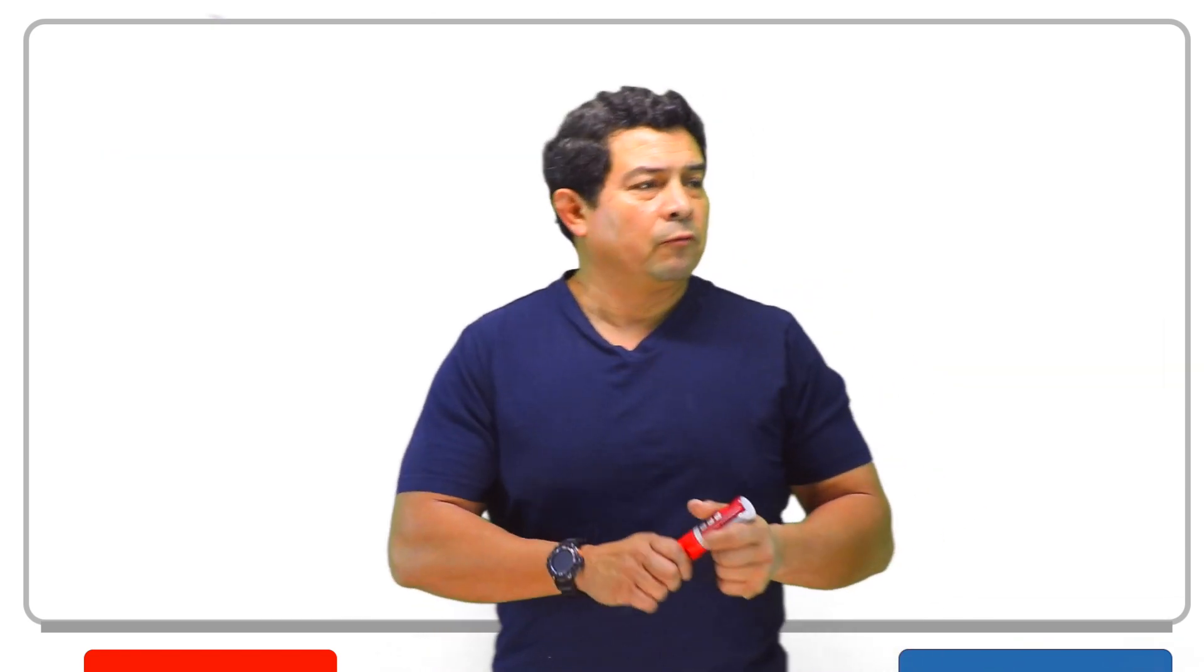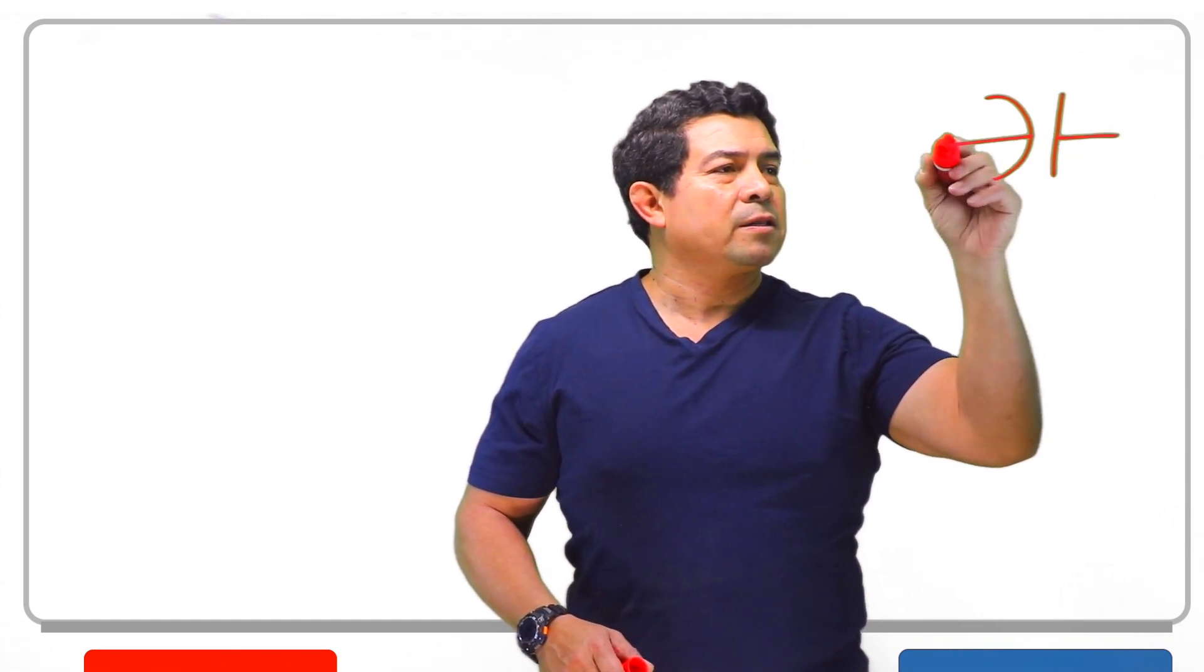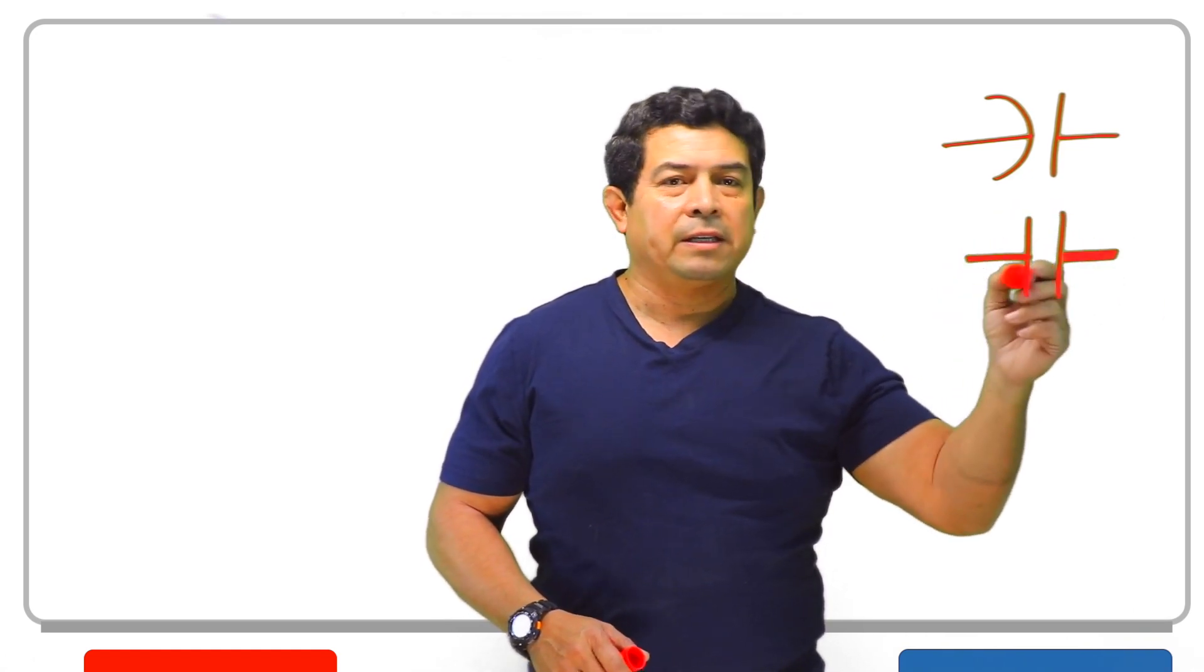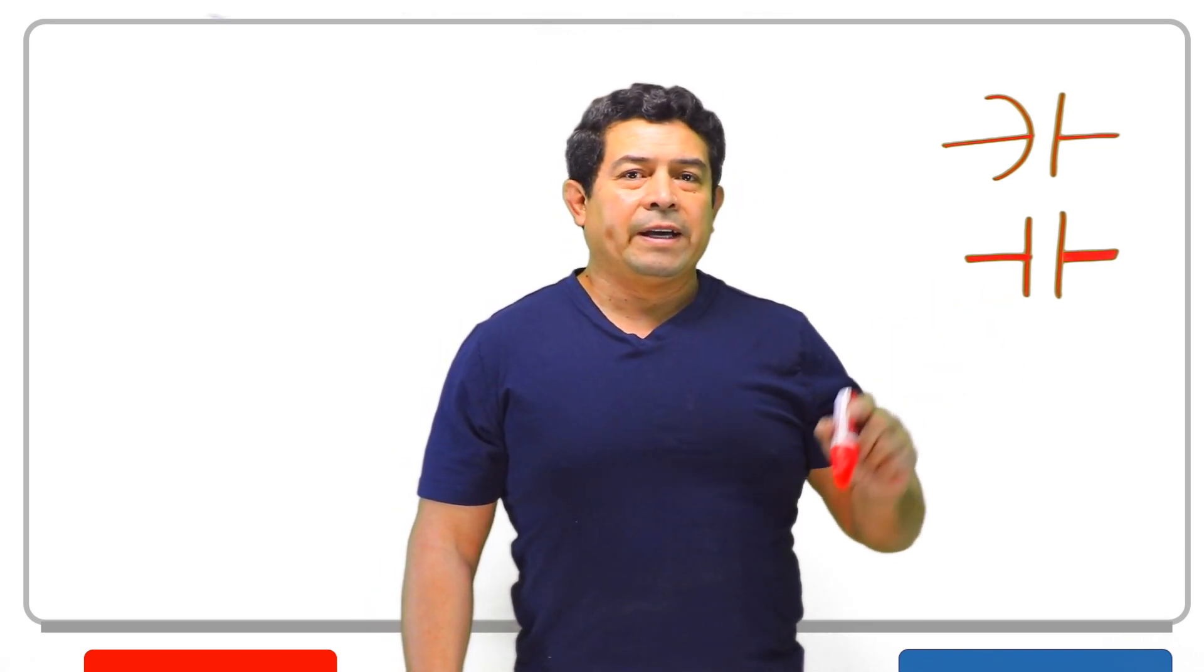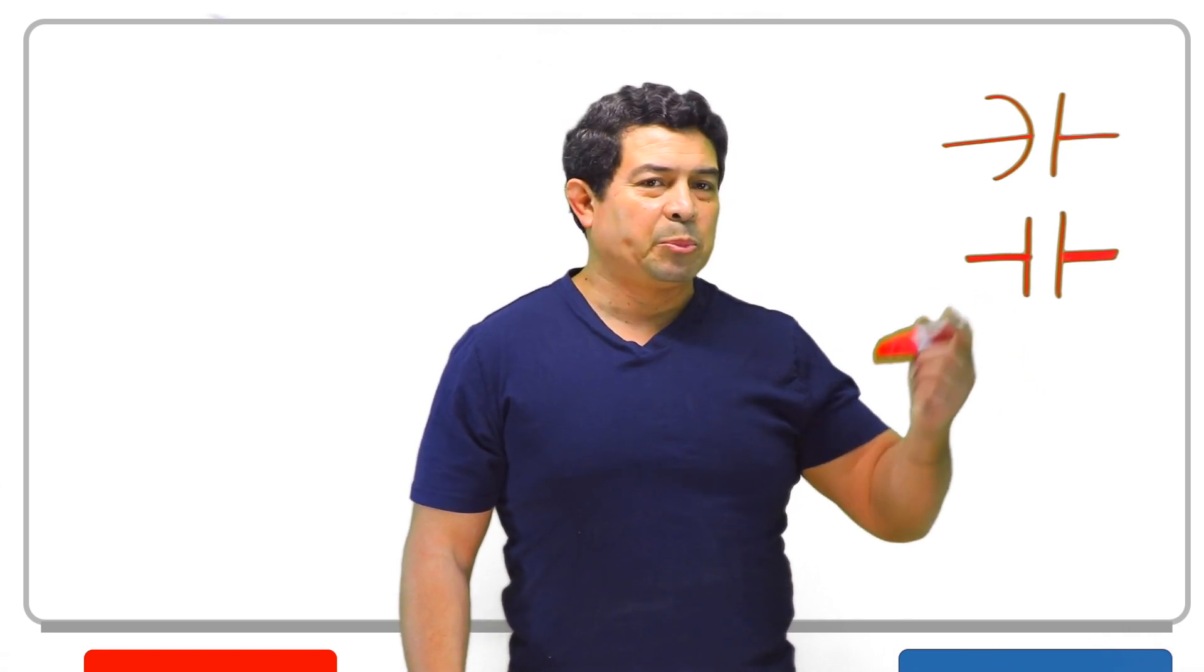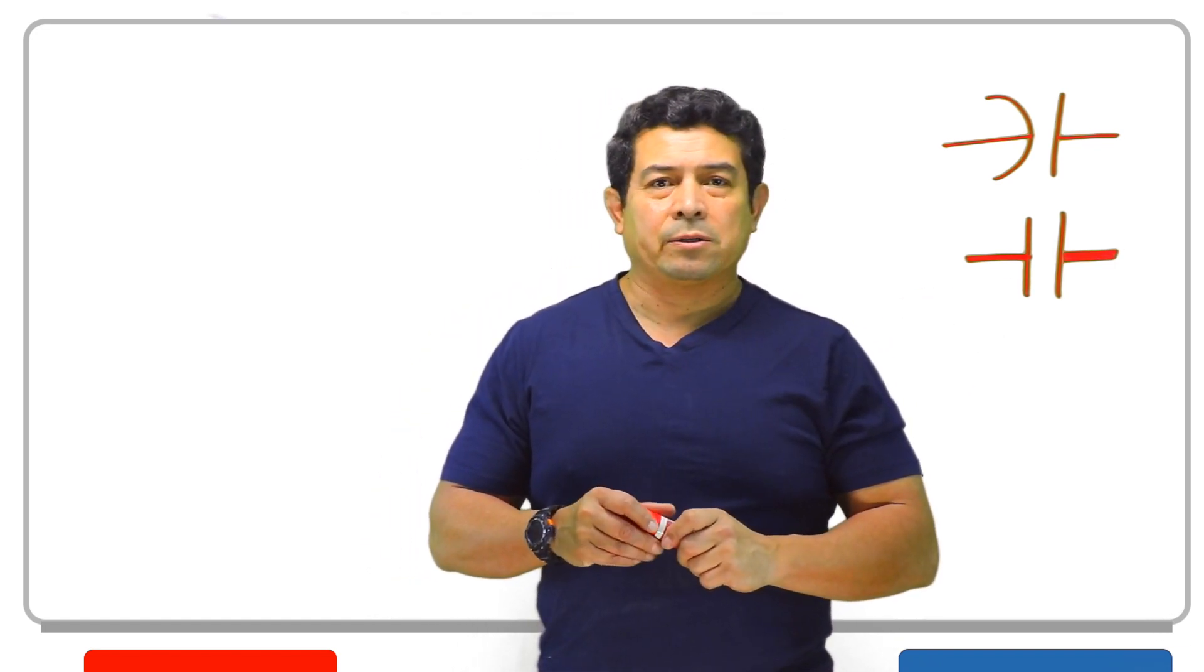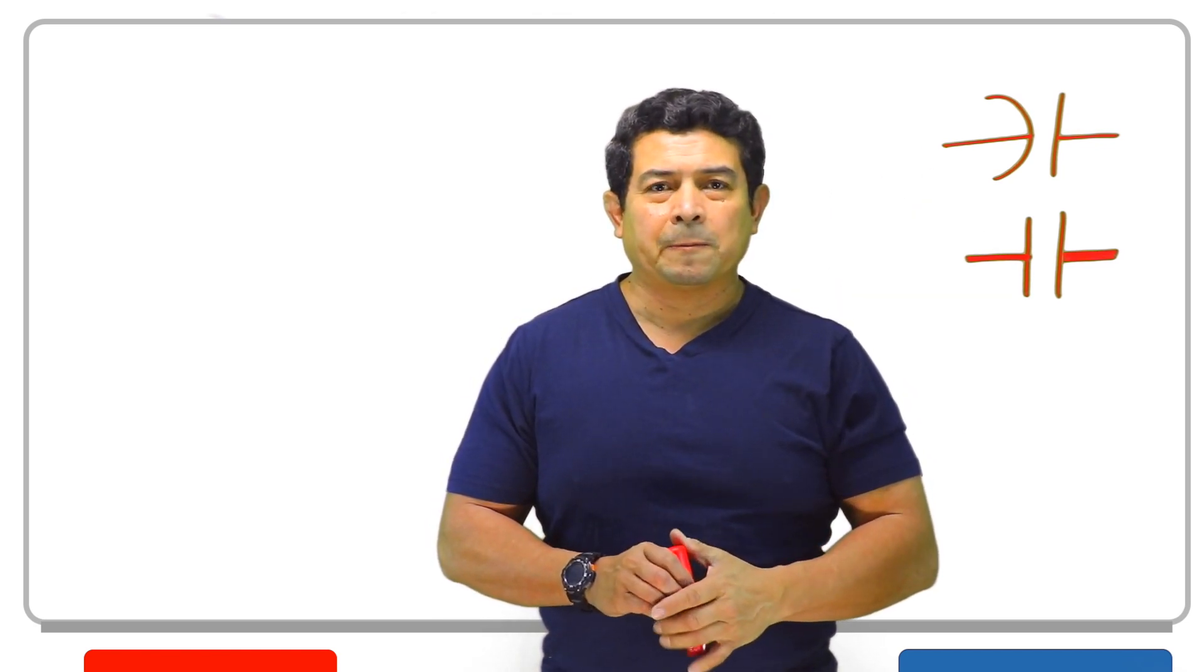The symbol for a capacitor is going to look like this. So anytime you see this, that represents a capacitor. Sometimes, on some schematics, you're going to see this as a symbol for a capacitor. Now, you have to be careful because that looks like a normally open set of contacts. But you have to understand what the schematic is trying to say. So either of these two is the symbol for a capacitor.